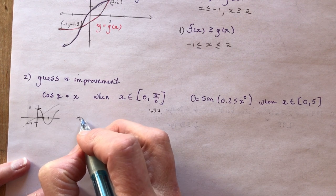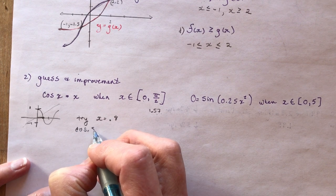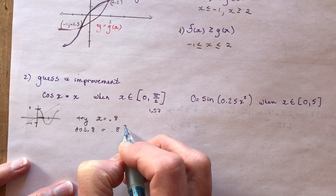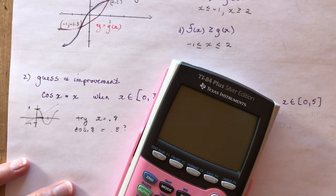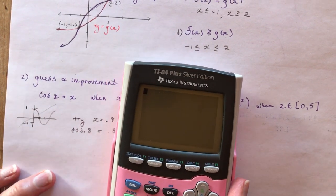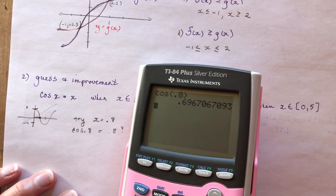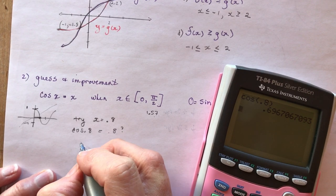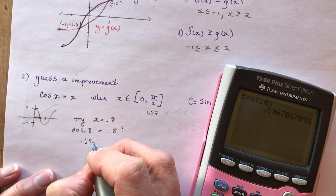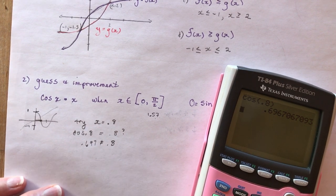Let's try x = 0.8. What's cos(0.8)? Make sure you're in radians. The cos of 0.8 is approximately 0.697 — that's not equal to 0.8, so you want to try something a little bit smaller.